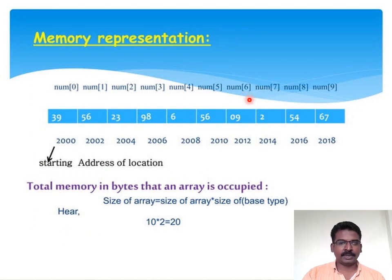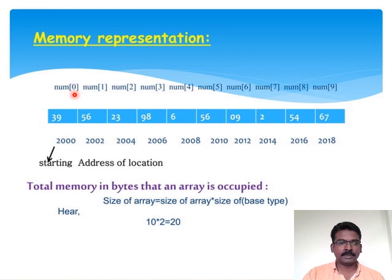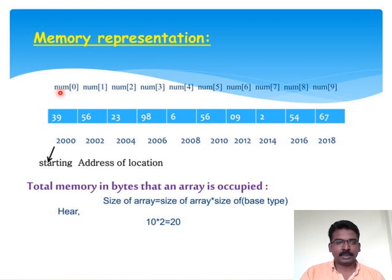This is the memory representation of a one-dimensional array. The blue color represents the memory locations, and the elements 11, 39, 56, 23 — right from 39 to 67 — 10 elements are stored in the array. Indexing starts from 0 to 9: the first location is represented as number[0] and the last location as number[9].